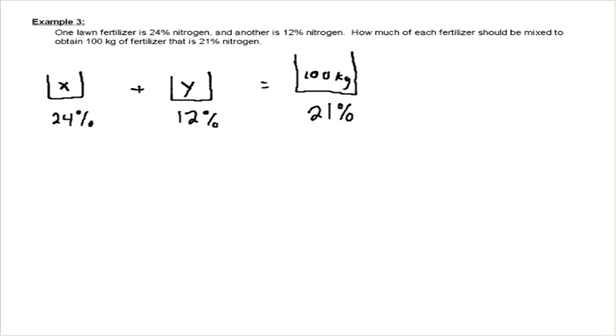And let's define our variables then. So let's say, let's let X equal the amount at 24%, and we're going to let Y equal the amount at 12%. So we've defined our variables.